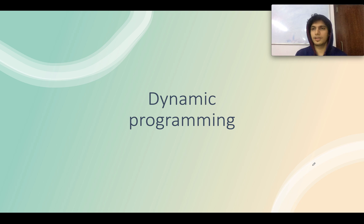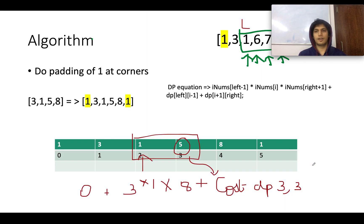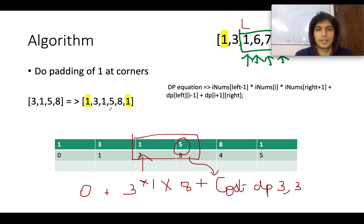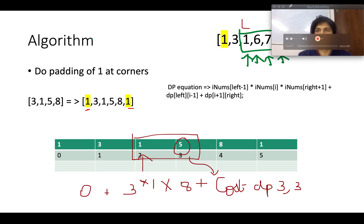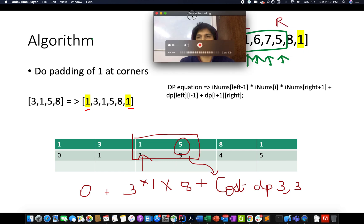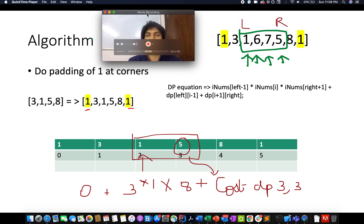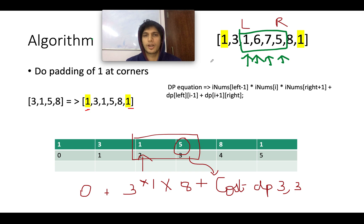Let's go with the dynamic programming approach. Just before starting with the algorithm, one thing we are going to do is pad the input — we will add 1 to the start and 1 to the end of the input so that we don't need to handle corner cases; it will be appropriately handled by our algorithm. Also, if you have done something like longest palindromic substring in the past, it will be quite helpful for you to understand this algorithm.